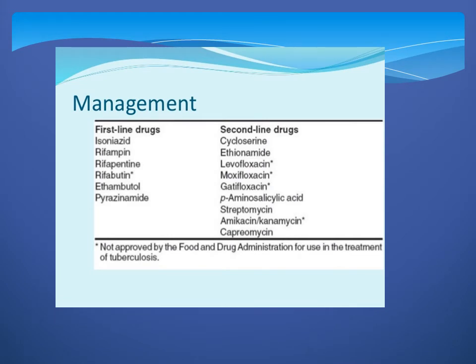Some drugs are available for the management of tuberculosis. There are two generations: first line drugs and second line drugs. First line drugs should be prescribed first; if not cured, then a combination of drugs should be given. First line drugs include isoniazid, rifampicin, ethambutol, and pyrazinamide. Second line drugs include cycloserine, ethionamide, levofloxacin, moxifloxacin, streptomycin, and capreomycin. These are the drugs used for the treatment of tuberculosis.